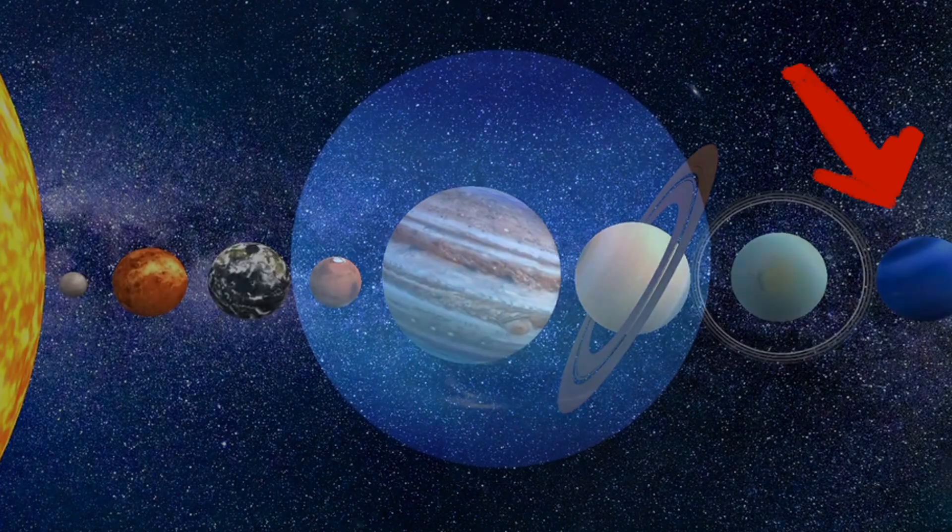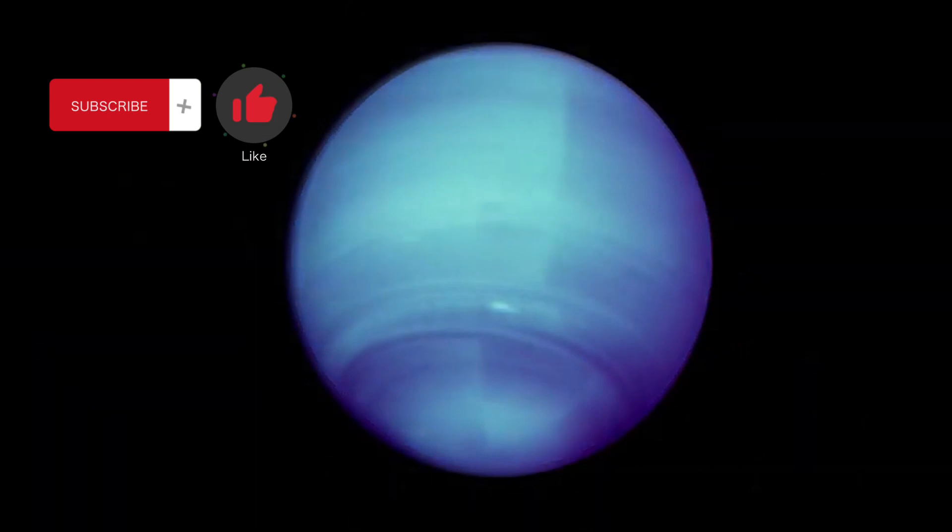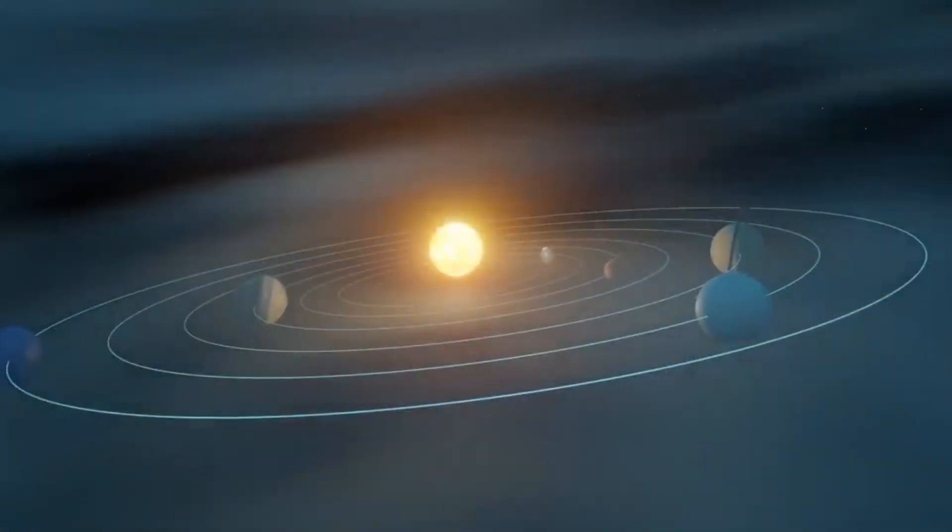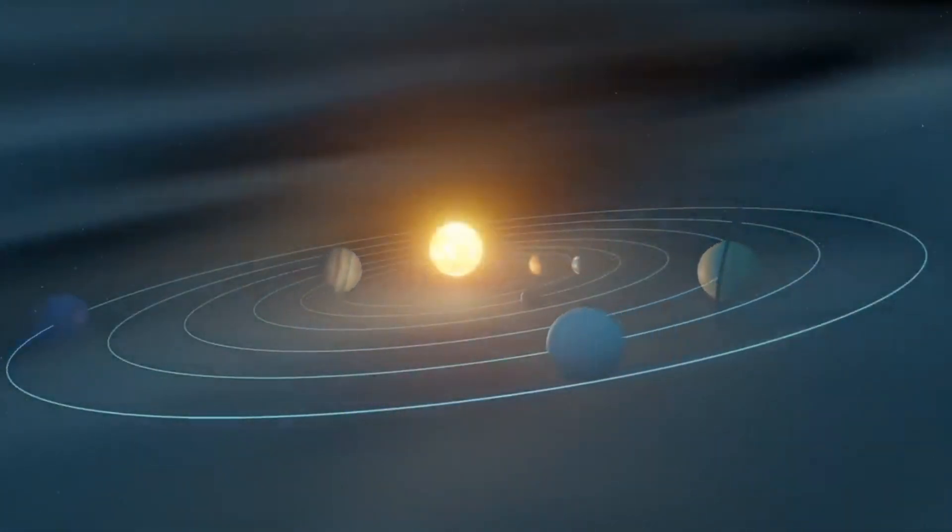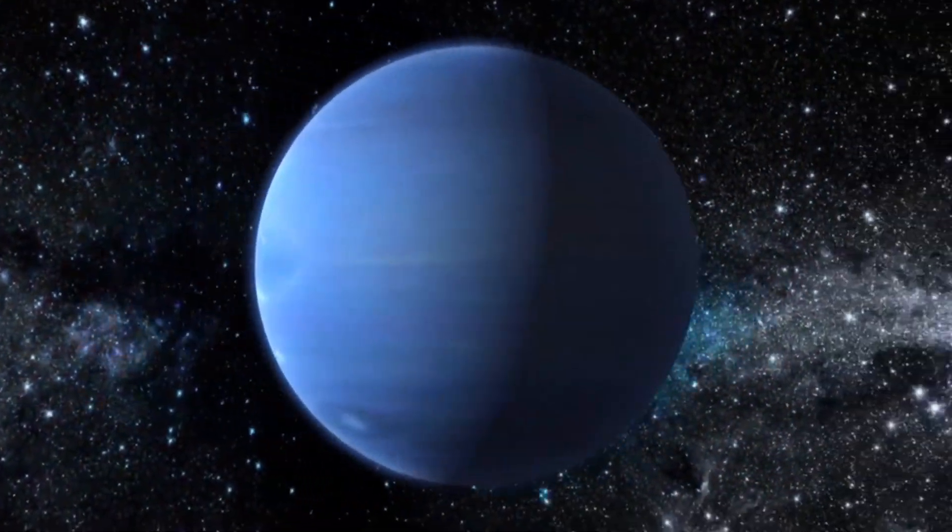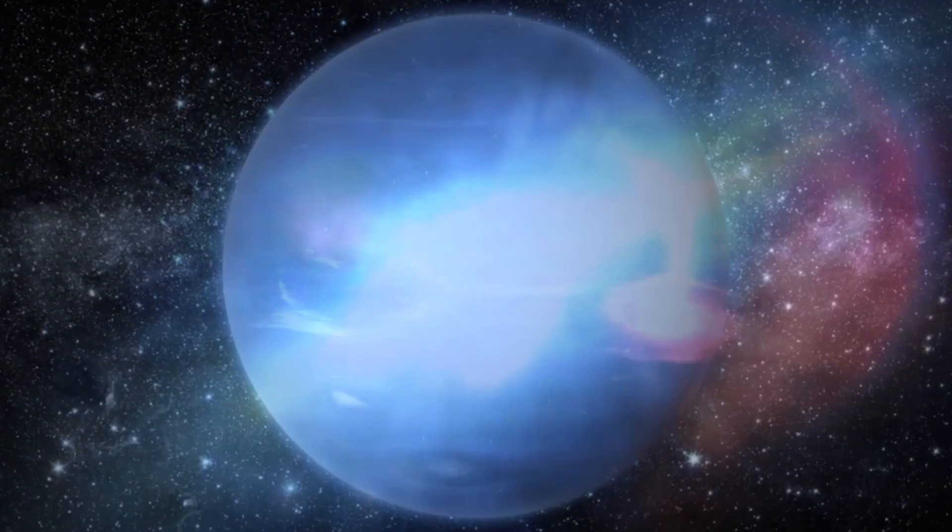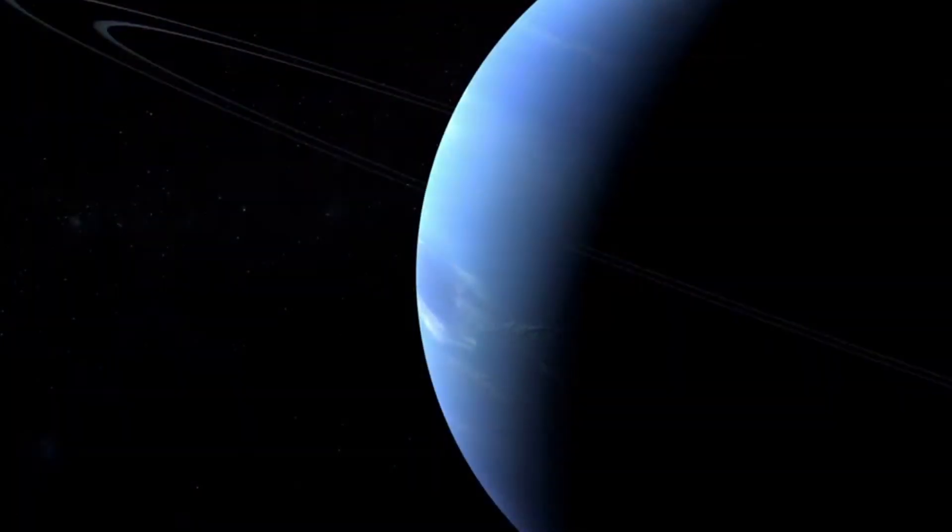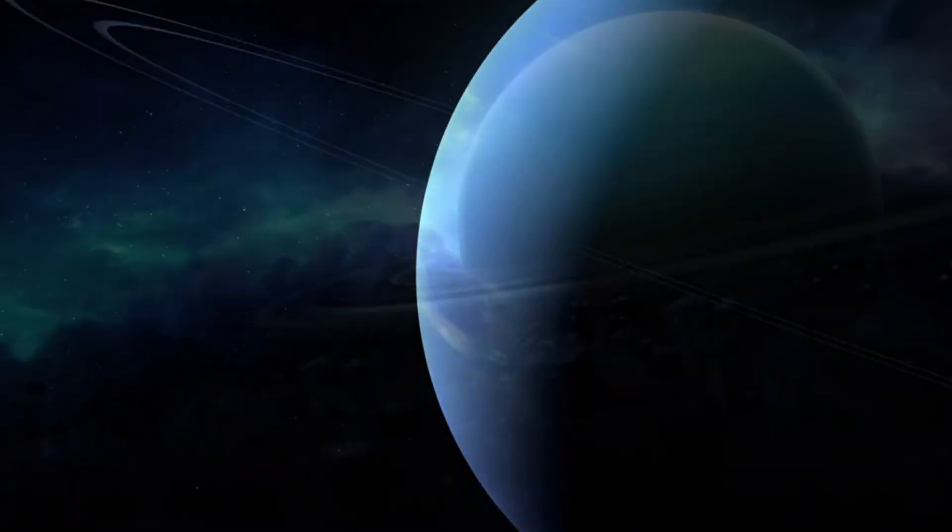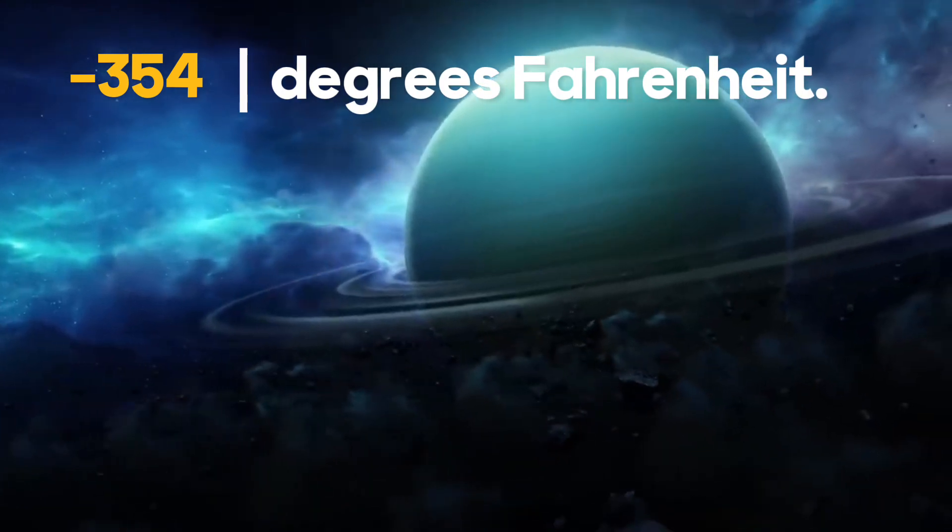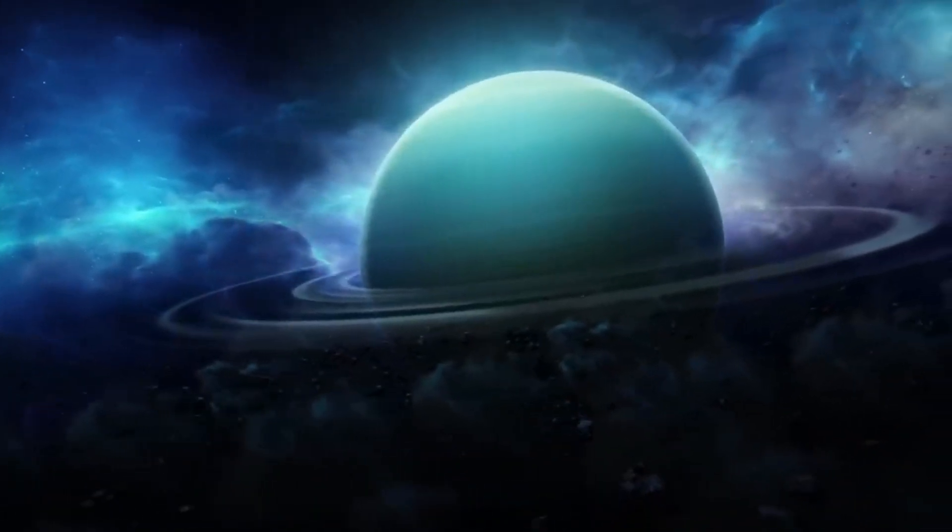Neptune is the eighth and outermost major planet in the solar system. It is the fourth largest planet by diameter and the third most massive planet. Neptune is an ice giant, meaning that it is composed primarily of water, methane, and ammonia. It is the coldest planet in the solar system with an average surface temperature of minus 354 degrees Fahrenheit.